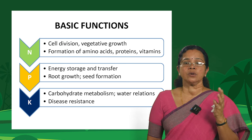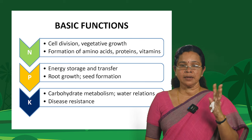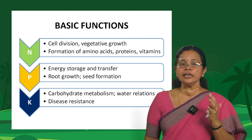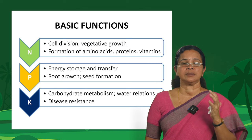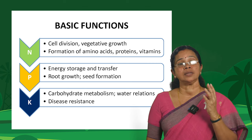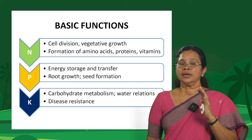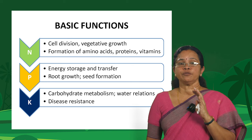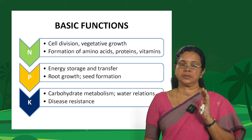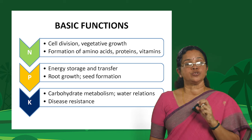What you see outside a plant — the greenness, the leaves, the stems, the branches — all relate to nitrogen. Nitrogen is also involved in the formation of amino acids, proteins and vitamins. Coming to the second nutrient, phosphorus is otherwise referred to as the energy nutrient.